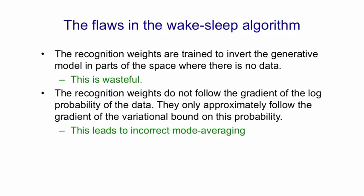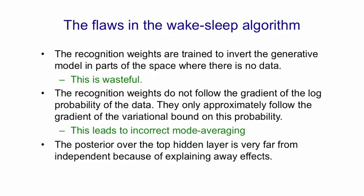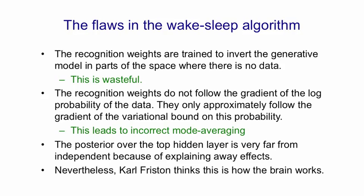A final problem is that the true posterior over the top hidden layer is bound to be far from independent because of explaining away effects, and yet we're forced to approximate it with a distribution that assumes independence. This independence approximation might not be so bad for intermediate hidden layers, because if we're lucky, the explaining away effects from below will be partially cancelled out by prior effects from above. Despite all these problems, Carl Friston thinks this is how the brain works. When we initially came up with the algorithm, we thought it was an interesting new theory of the brain. I currently believe it has too many problems to be how the brain works and that we'll find better algorithms.